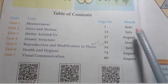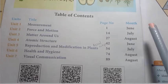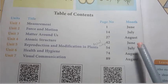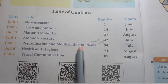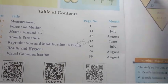Unit 1: Measurement, Force and Motion, and then Atomic Structure, Reproduction and Modification in Plants. So, here are the measurements.